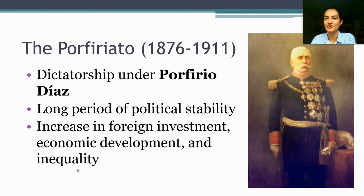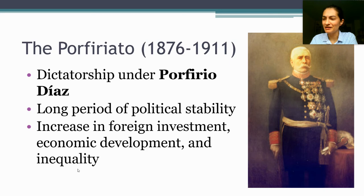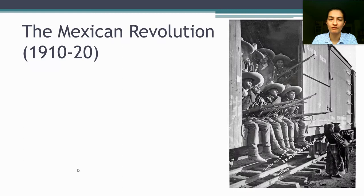As a side note that becomes important later, Díaz also sells most of the rights to extract Mexico's oil to foreign investors. Towards the end of his rule in 1908, Porfirio Díaz makes an offhanded comment to a reporter that Mexicans might be ready for democracy and that it might be appropriate for him to step down. People interpret this as Díaz saying he will not be a candidate in the 1910 presidential election, and immediately a wave of political organizing springs forth — Mexicans start forming political parties, declaring candidacies, and articulating different visions for Mexico's future.